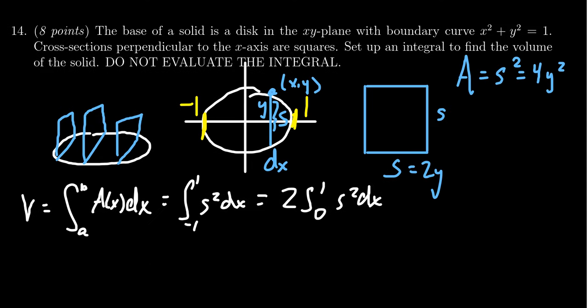So notice what we now have is that our integral can be written as we're going to get 2 times the integral from 0 to 1 of 4 times y squared dx, or in other words we get 8 times the integral from 0 to 1 of y squared dx. That's a step in the right direction.